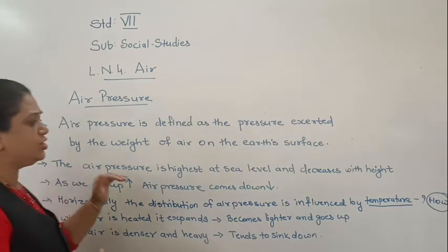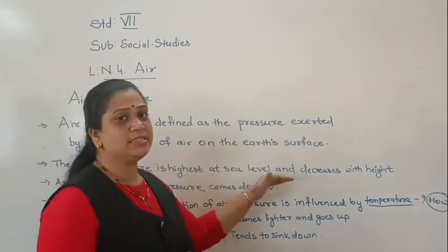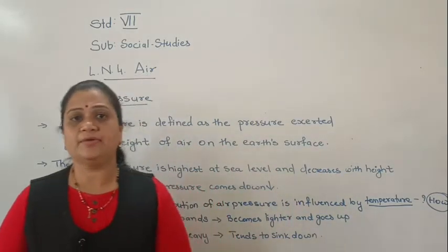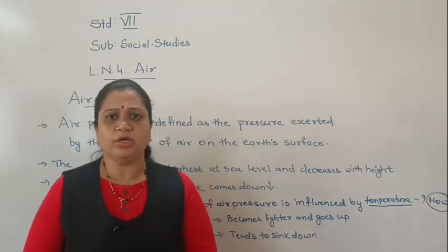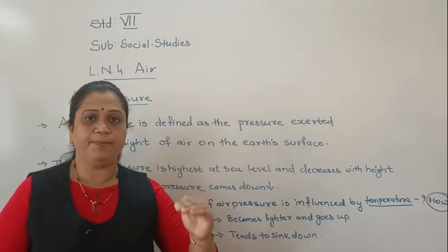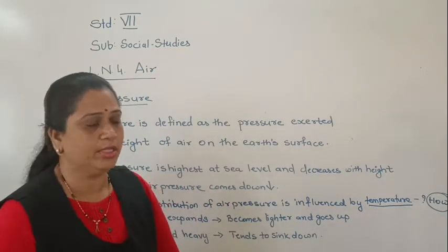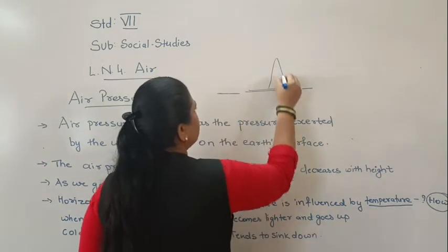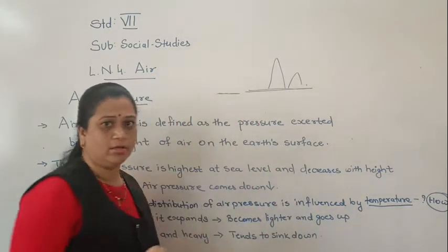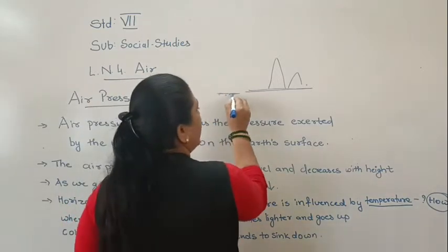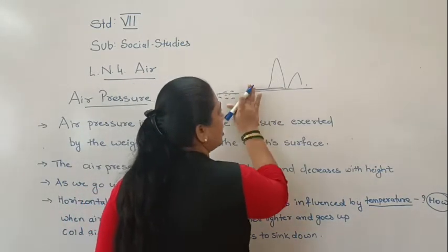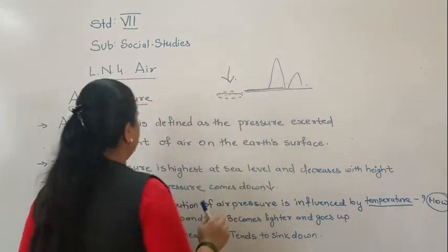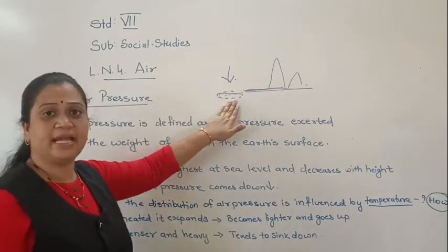The air pressure is highest at the sea level and decreases with height. In class fifth we studied about altitude — the height of a place above the sea level is called altitude. When we are at the sea level, the air pressure is highest there.